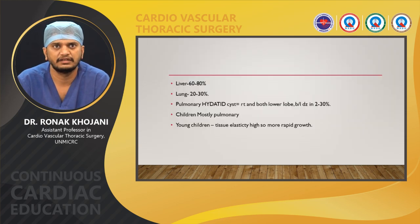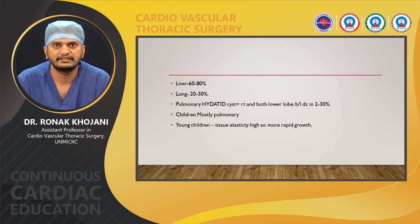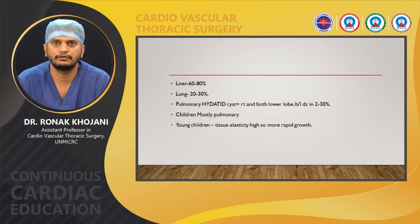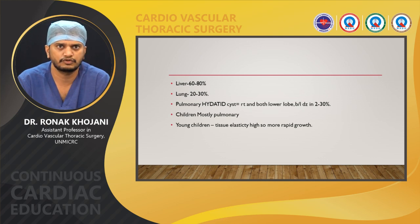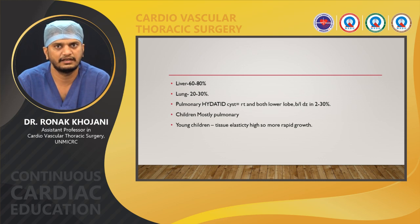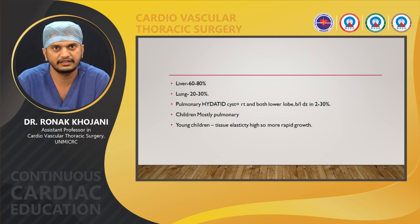Regarding the involvement of various organs in hydatid disease: the liver is involved in 60 to 80 percent of cases, and the lung in 20 to 30 percent. Pulmonary hydatid disease is most common in the right lung. When bilateral, the bilateral lower lobe is more involved, with the incidence of bilateral lung disease being 2 to 30 percent. In general, the most common presentation in children is pulmonary disease, and hydatid cysts grow more rapidly in younger children due to the greater elasticity of lung tissue.